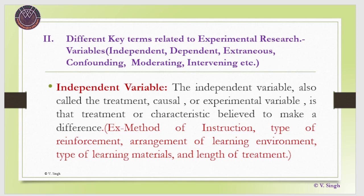We will now try to understand different key terms related to experimental research so we can better understand experimental research. We will look at different types of variables involved: independent variable, dependent variable, extraneous variable, confounding variables, moderating, and intervening variables. Primarily we need to understand independent and dependent variables. Let us first see what is an independent variable.